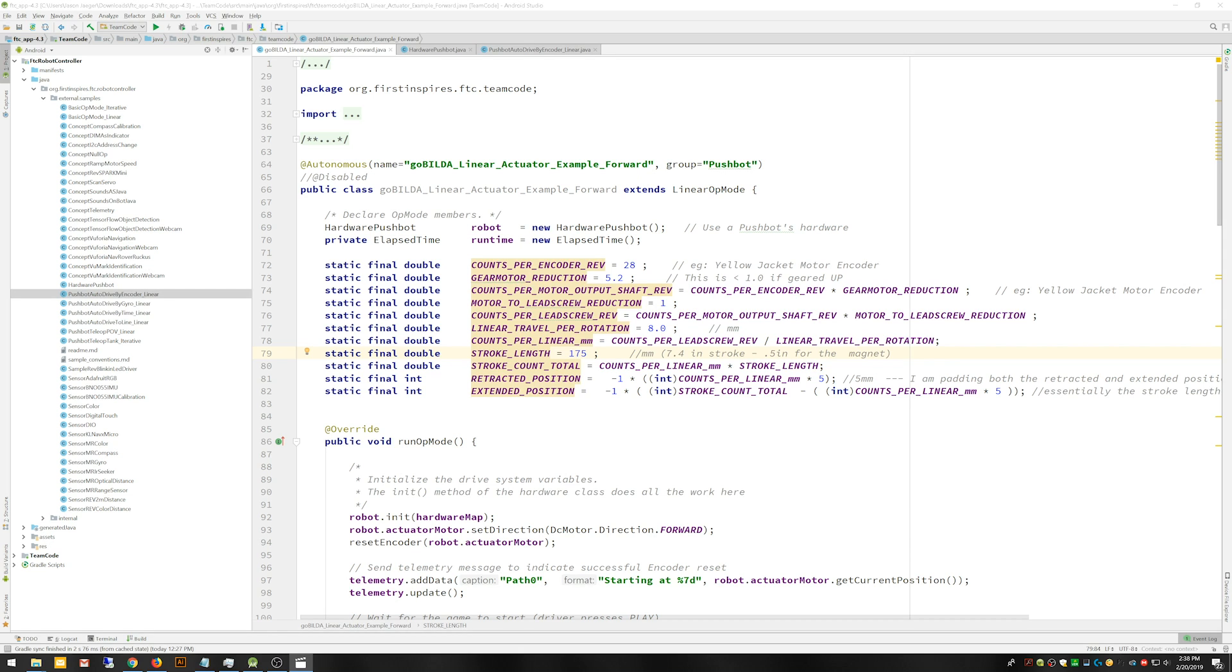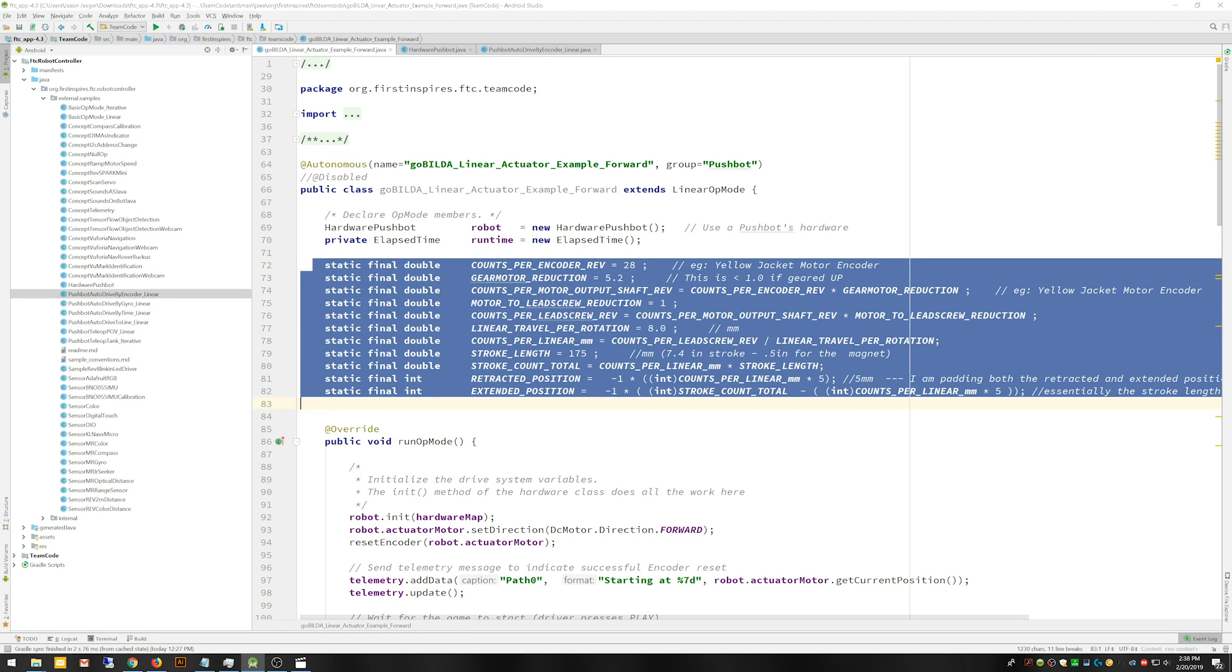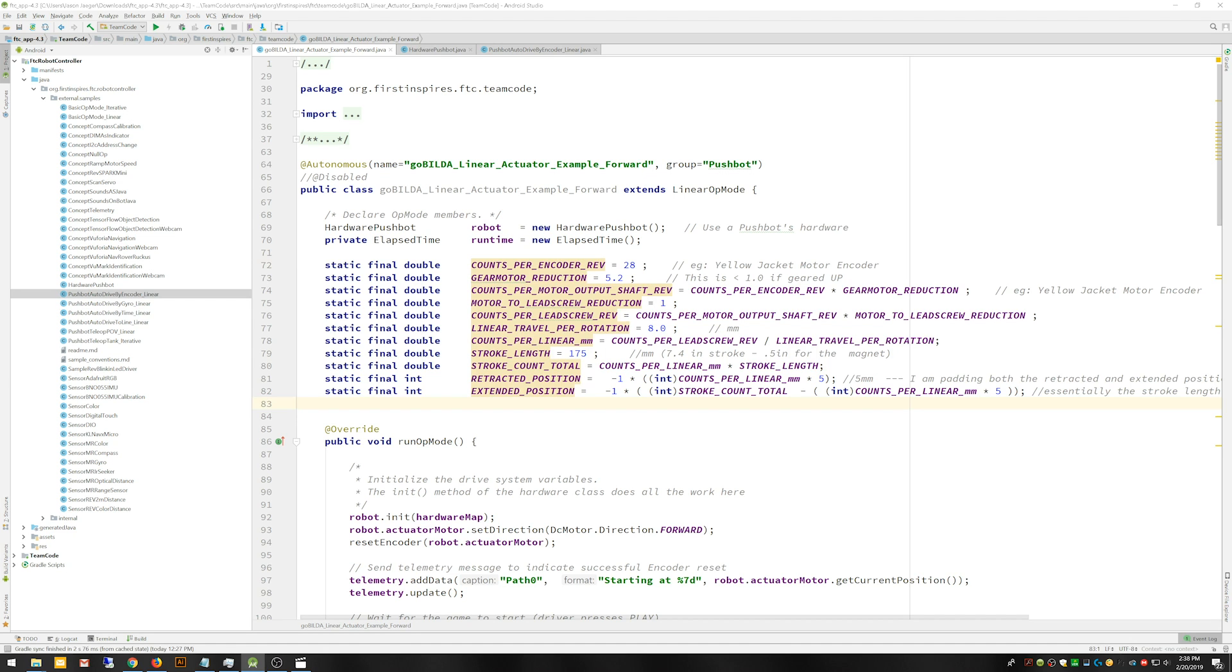So taking a look in the code, the first thing you're going to see is a lot of variables being set up. And these variables help to calculate how far essentially you want to travel. And this is going to make it easy to swap out motors with different ratios and things. So the very first one I want to note is the counts per encoder rev. And that's essentially the countable events per rotation of the motor, not the gearbox, but the motor itself. And that's 28 on this particular motor. And then we're looking at the motor gearbox reduction. So the reduction of the gearbox on that motor is 5.2 on this particular motor.